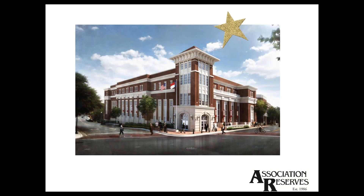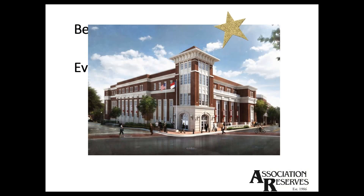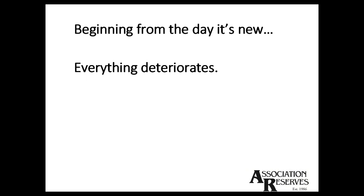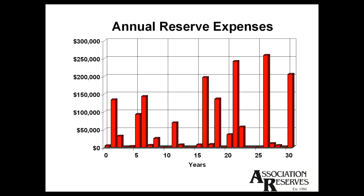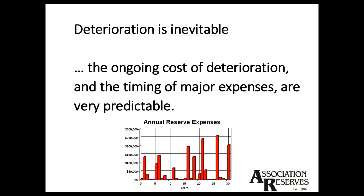It all starts when the building is brand new — you don't wait until you're 10 or 20 years old because deterioration starts the day it's brand new. Everything deteriorates, and that deterioration creates anticipated future expenses. You can see the layout of expenses over the years: some years significant expenses, some years no expenses — it's very irregular. And that's the nature of the work that we do. The key is that this deterioration is inevitable. It's an ongoing cost of deterioration. Those expenses didn't just happen all at once — they happened over the course of many, many years, and they are very predictable.